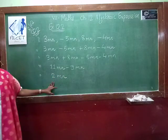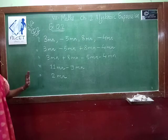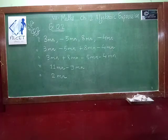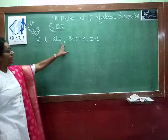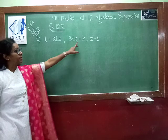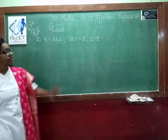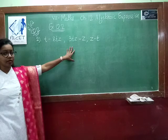This way we can do the addition for the first sub-question. Now move on to the second question. The question is: t minus 8tz, plus 3tz minus z, and z minus t. We arrange these terms column-wise and do the addition or subtraction.